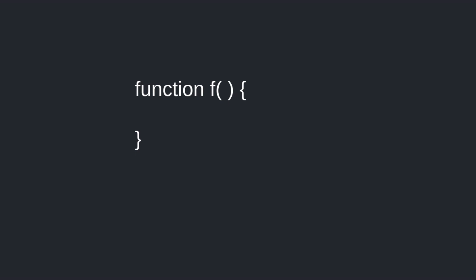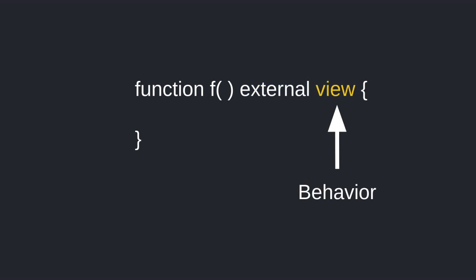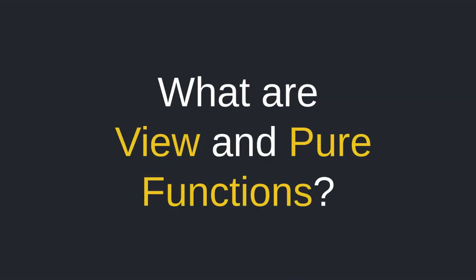Functions can be declared to have certain visibility like public, private, internal, and external. Functions can also be declared to have certain behavior like view, pure, and payable. In this video we're going to go over what view and pure functions are.